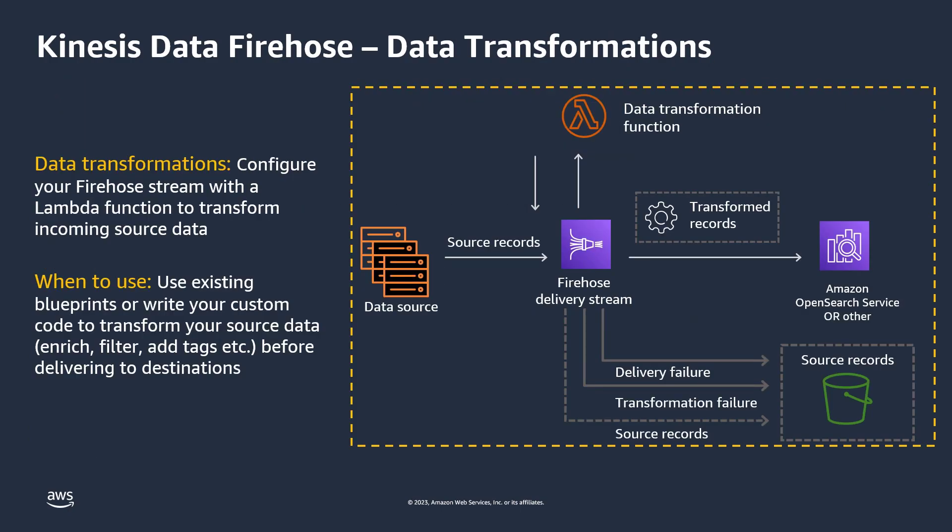Kinesis Data Firehose also allows you to configure your stream with a Lambda function to transform incoming source data before delivering it to its destination. You can use existing Lambda blueprints for this purpose or write custom code to transform your source data.